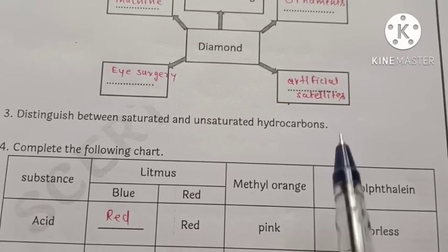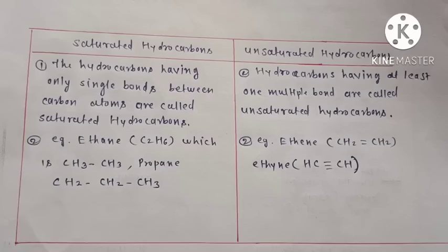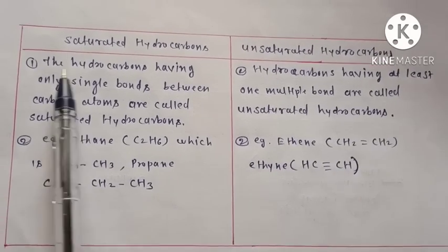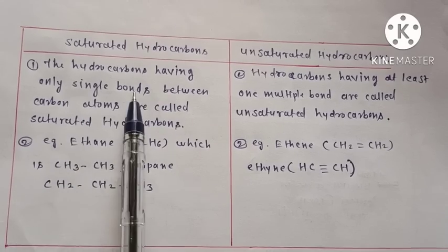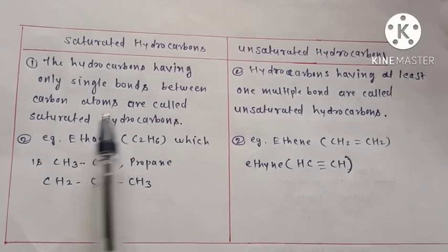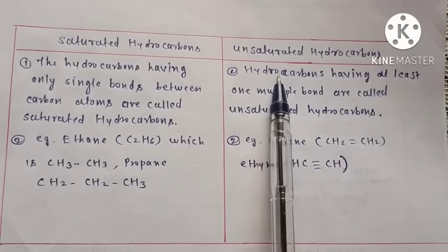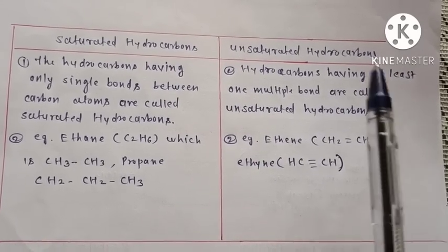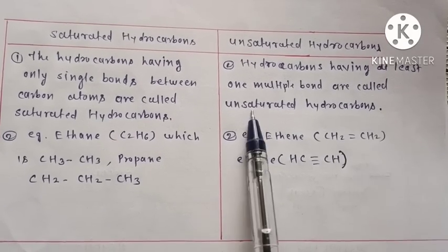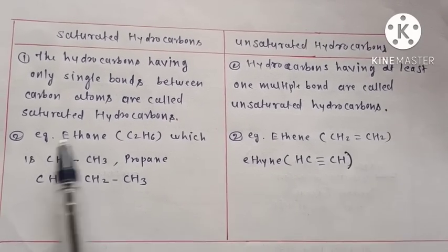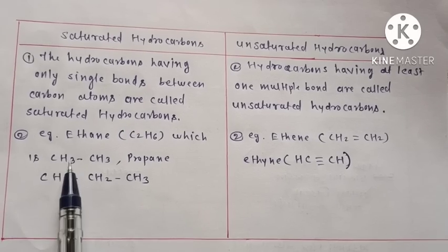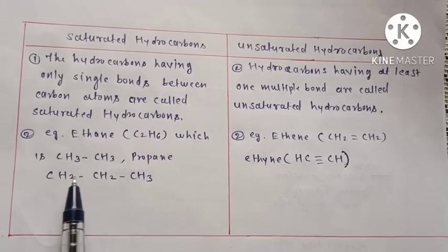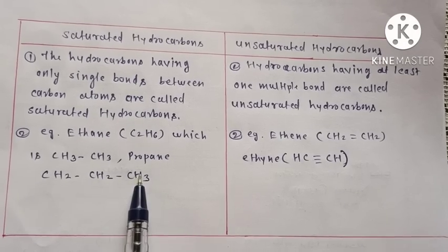Third: distinguish between saturated and unsaturated hydrocarbons. Answer: saturated hydrocarbons are hydrocarbons having only single bonds between carbon atoms. For example, ethane C2H6, which is CH3 single bond CH3, and propane CH3 single bond CH2 single bond CH3.